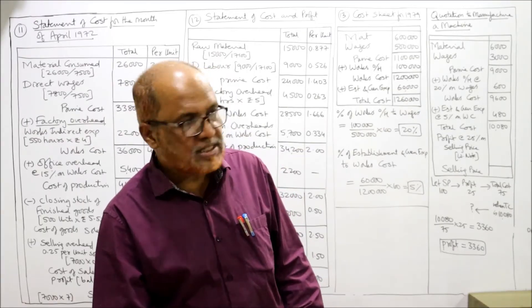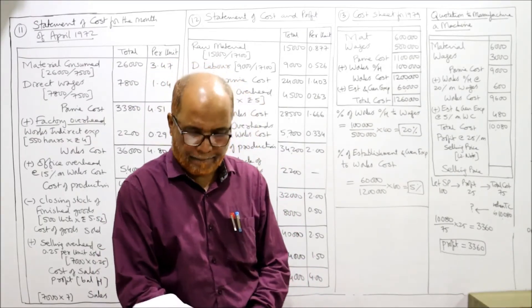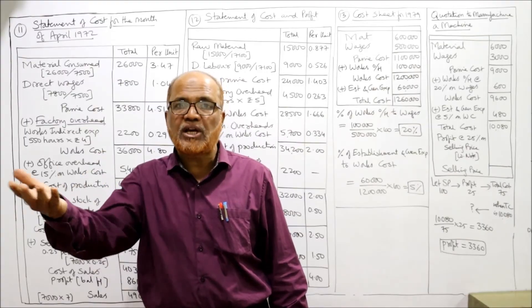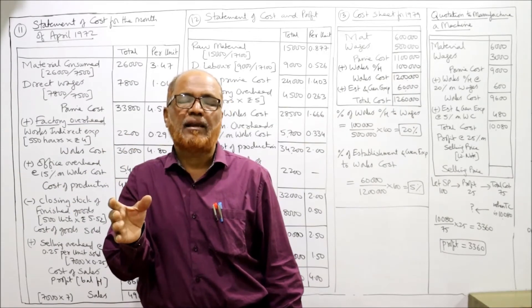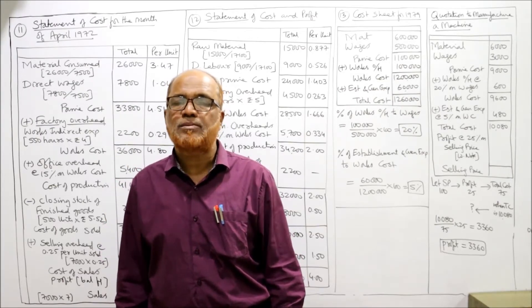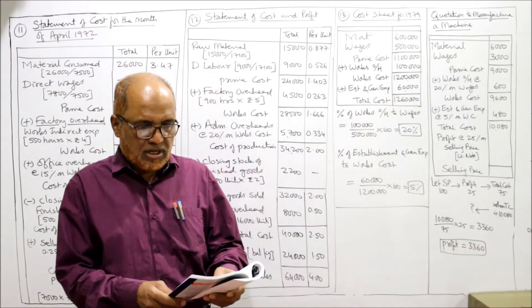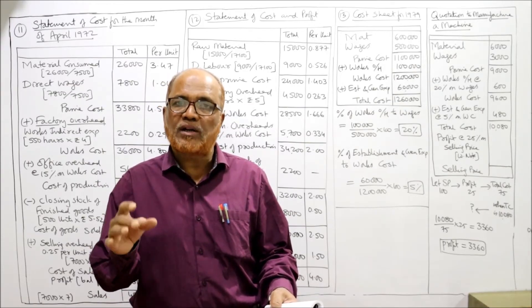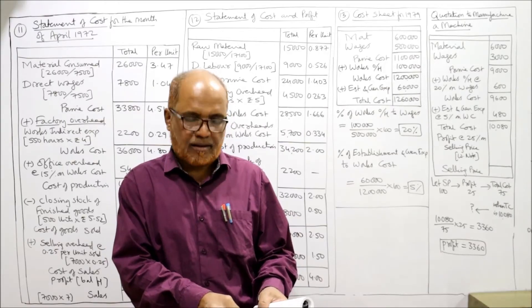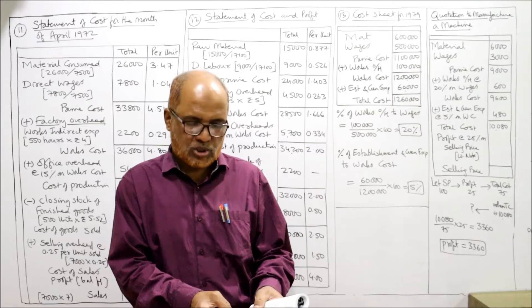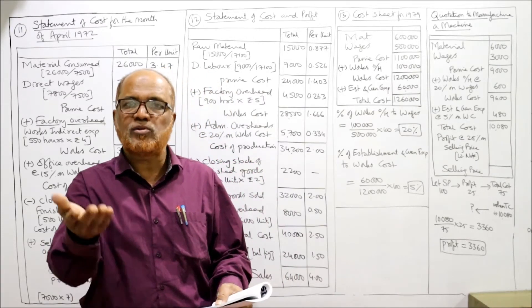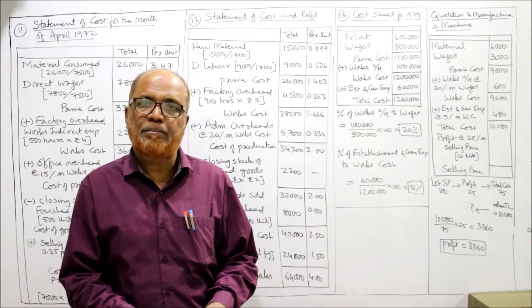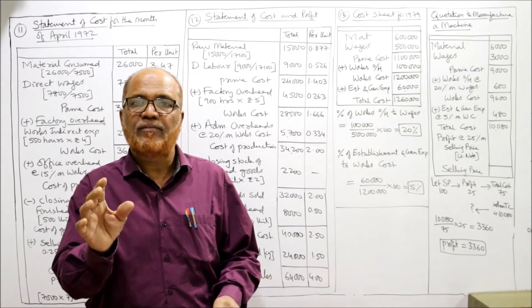From problem 13 onwards, we have tender problems. A manufacturer has to give a quotation for a tender, calculated on the basis of the past year's cost of production. The accounts of a manufacturing company showed the following for 1979: material used 6 lakh, productive wages 5 lakh — giving prime cost; works overhead 1 lakh — giving works cost; establishment and general expenses 60,000 — giving total cost of production.